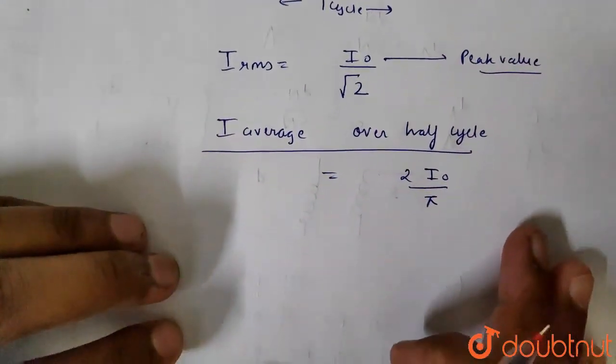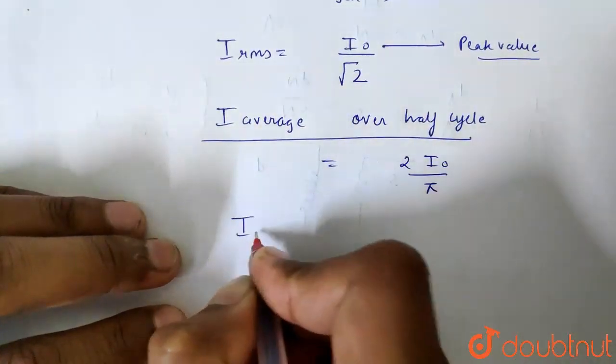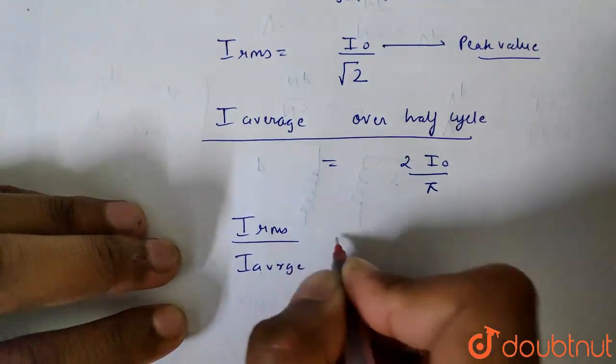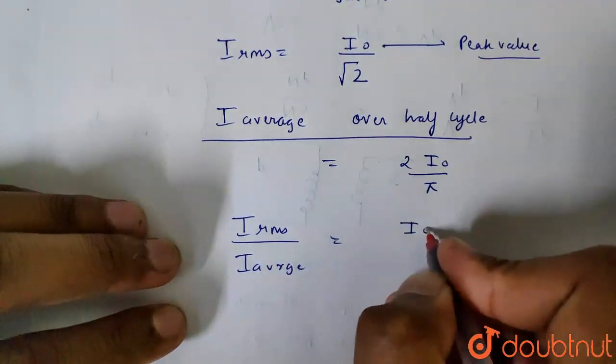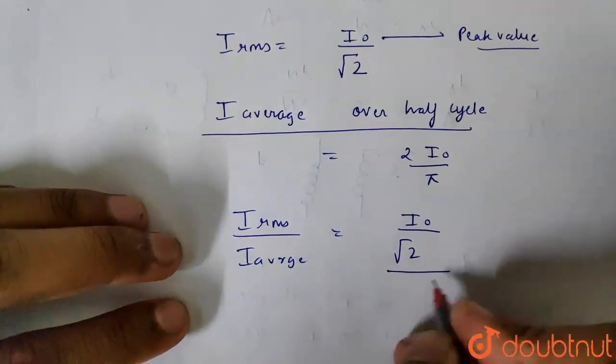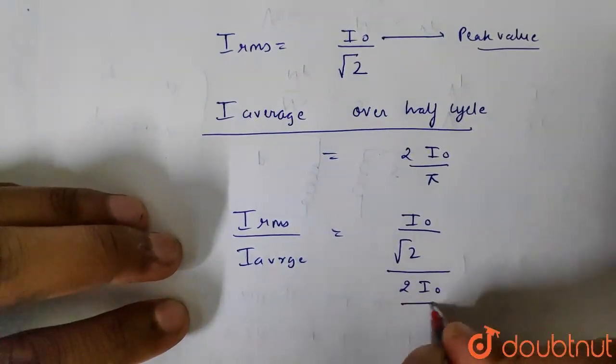So we need this ratio: I RMS upon I average. That is I0 by root 2 upon 2 I0 by pi.